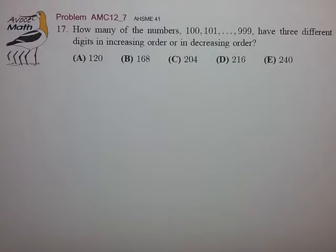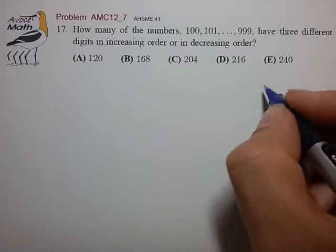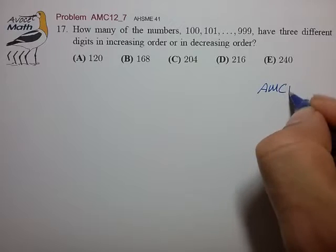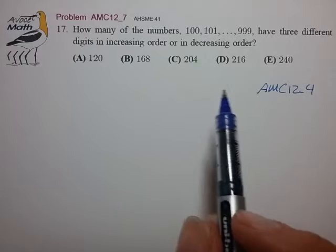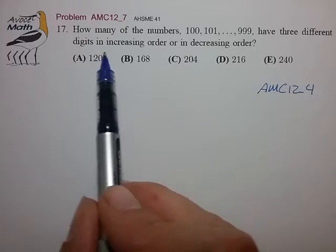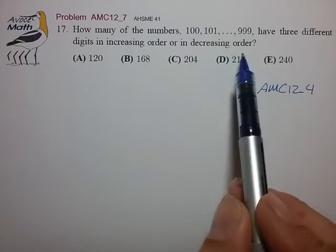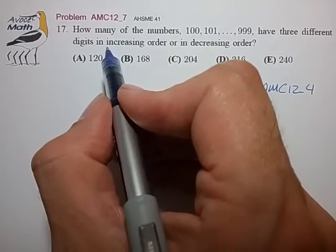So this is a little bit similar to the AMC 12 underscore 4 problem that we'd seen just a little bit before. So let's see how we might do this. I'm not aware of any way to do this problem in one shot, so it looks like we're gonna have to do this in cases.